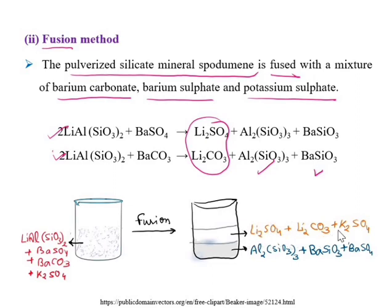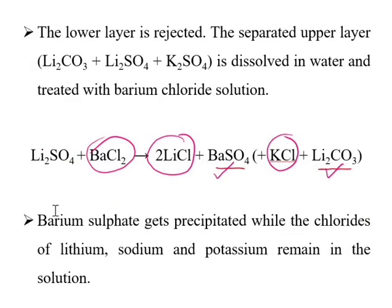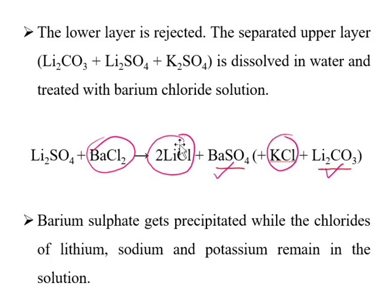The insoluble lower layer is separated by filtration. The soluble upper part contains lithium sulphate, lithium carbonate, and potassium sulphate. To this soluble part, barium chloride is added. Barium chloride converts lithium sulphate into LiCl and BaSO₄. Since Li₂CO₃ does not react with BaCl₂, the solution after this step contains LiCl, BaSO₄, KCl, and Li₂CO₃.